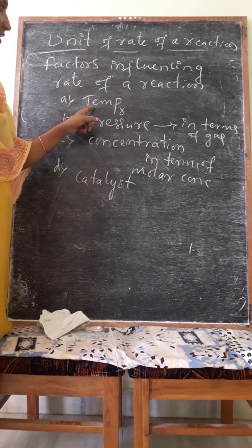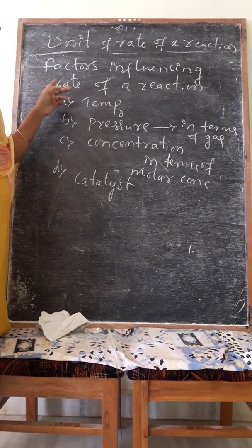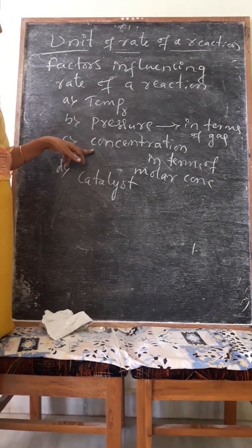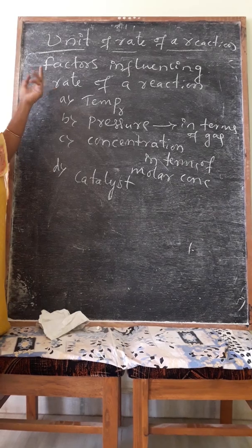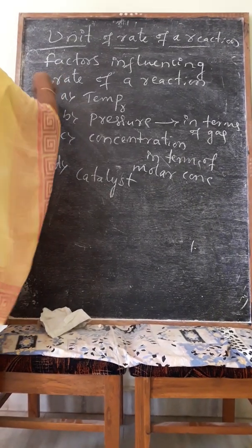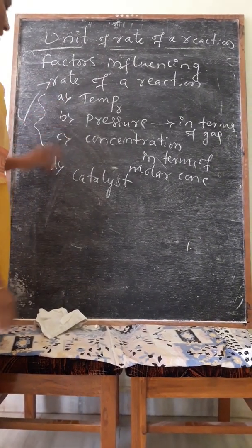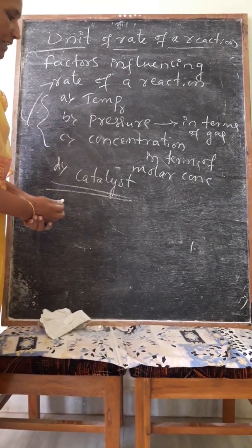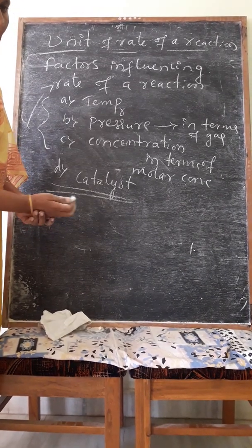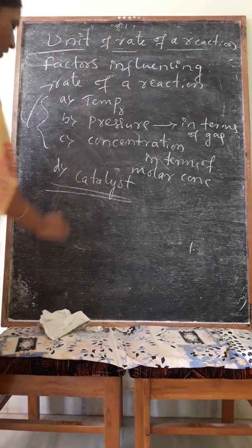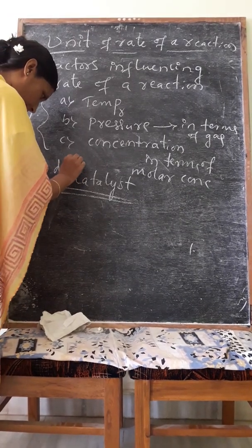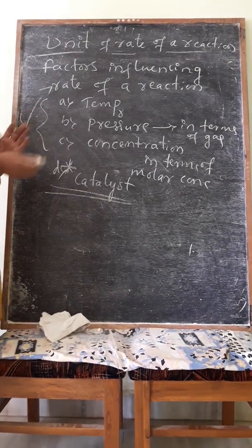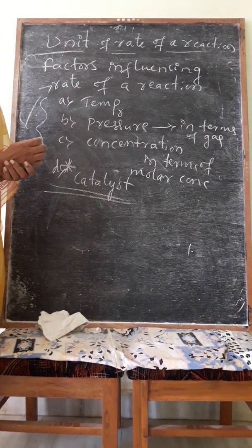When temperature increases, rate of reaction increases. Similarly, when pressure increases, rate of reaction increases. When concentration increases, rate of reaction increases. All are directly proportional to rate of reaction. In case of catalyst, if a positive catalyst is used, the rate of reaction automatically increases. These factors influencing rate of reaction will be discussed later in detail with graphs.